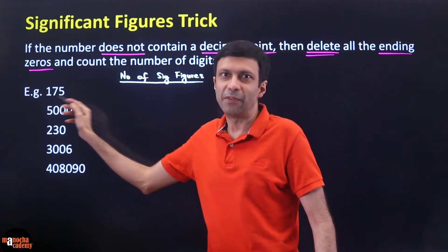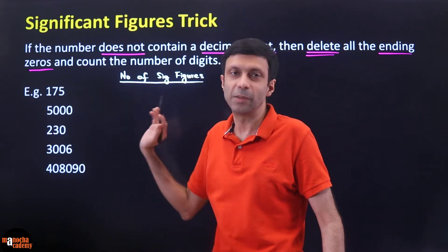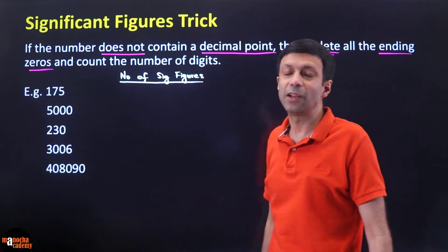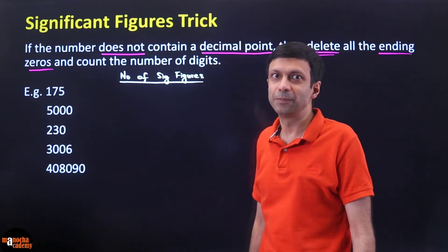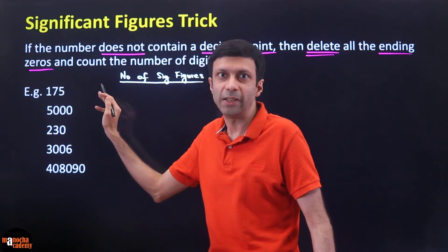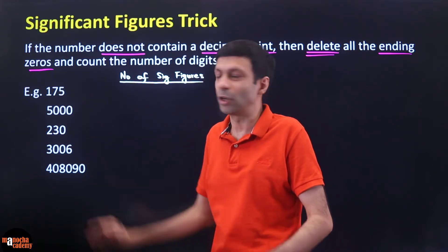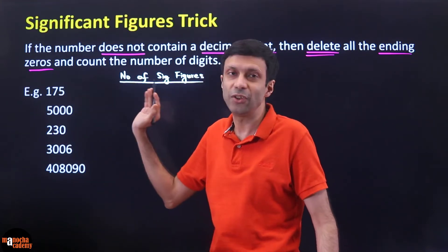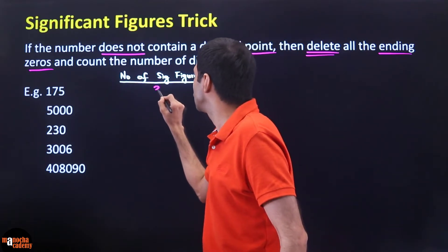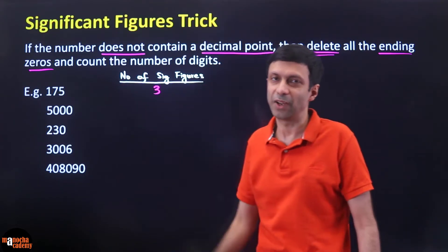If you take the number 175 — there is no decimal point, it's just a number. There is no zero for me to delete. So all the three digits are significant. The answer is going to be 3 significant figures, which are 1, 7, and 5.